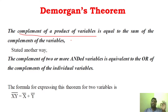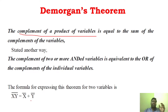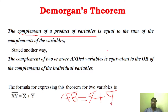We will start with the first theorem. According to this theorem, the expression is: xy̅ (the complement of the product of variables) is equal to x̄ + ȳ (the sum of the complements of the individual variables). You can also say that the complement of two AND variables is equal to the OR function of the complement of the individual variables. That is, A·B whole bar is equal to Ā + B̄. So this is theorem 1.